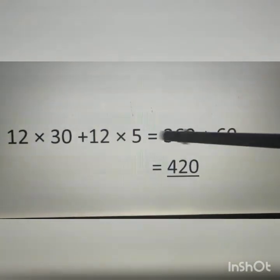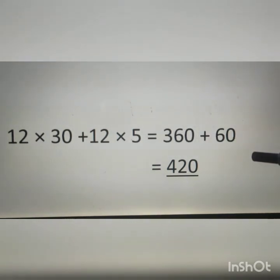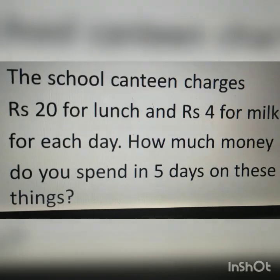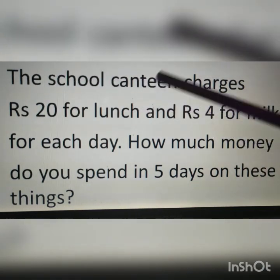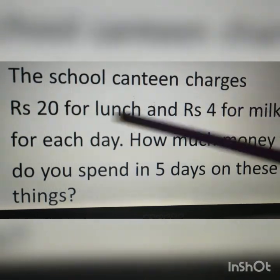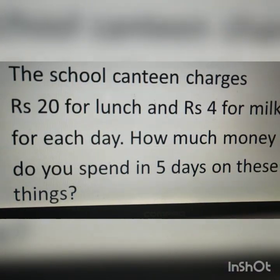Therefore 12 × 30 = 360, plus 12 × 5 = 60. So 360 + 60 equals 420. Now let us see one real-life example for the distributive property: the school canteen charges rupees 20 for lunch and rupees 4 for milk each day. How much money do you spend in 5 days? We have to find the cost for 5 days.